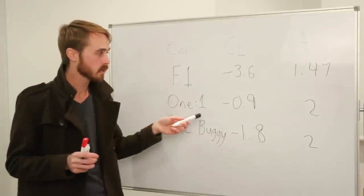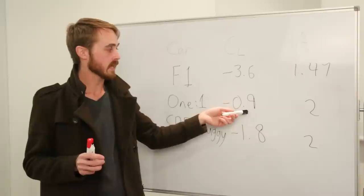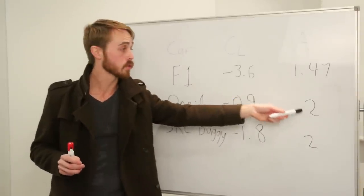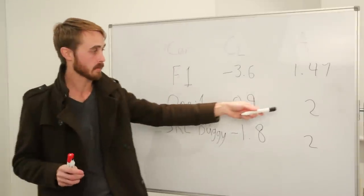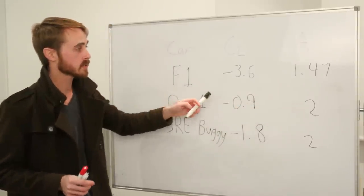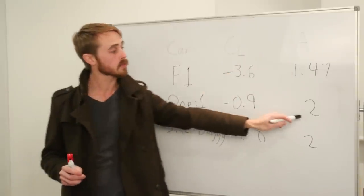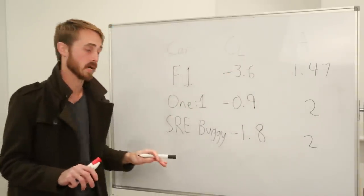On one to one the Koenigsegg will have a CL of 0.9 across an area of 2. Now this is what I calculated for my aerodynamics of hypercars series and we can see that this is quite a bit less downforce than a Formula One car even though we've got more frontal area of the car to work with.